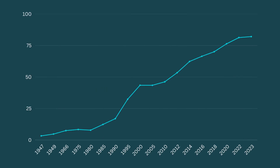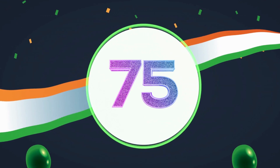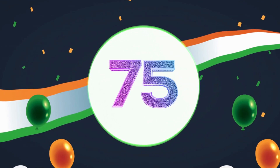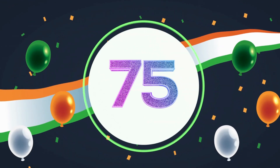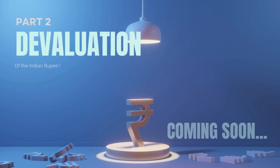Let's look at the graph. We have reached 75 years of independence as a milestone, but the value of $1 has grown enormously against the rupee. This is our currency devaluation. Let's explain what currency devaluation means.